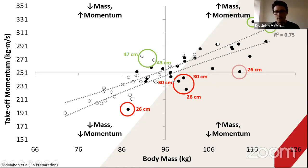It might be that these guys have a higher proportion of fat mass than is desirable. So maybe just losing some fat mass alone would automatically push them up into this upper right-hand quadrant where you've got higher mass and high momentum.